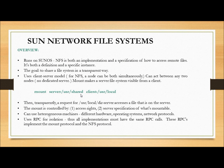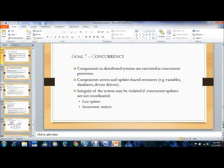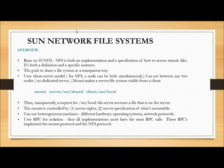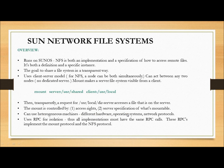An example of a DFS is the network file system, explained with Sun NFS. Sun network file system runs on a Sun operating system — network file system is both an implementation and specification to access remote files. The goal is to share a file system in a transparent way. It is a client-server model acting between any two nodes. Mount is controlled by access rights and server specifications. Sun NFS can use heterogeneous machines with different hardware, operating systems, and network protocols.